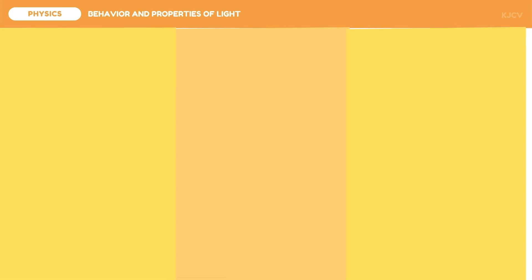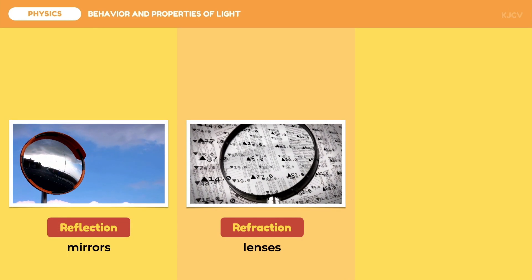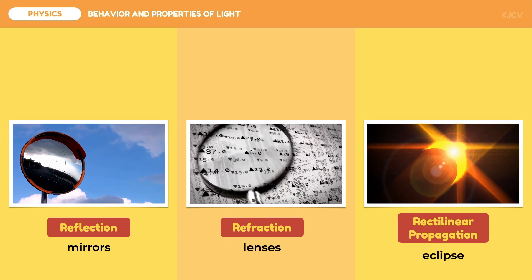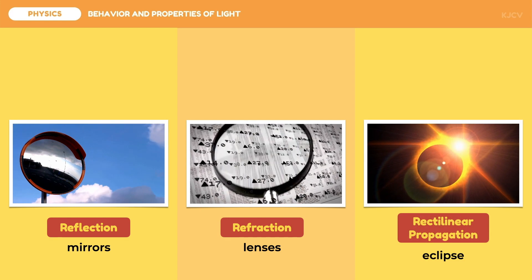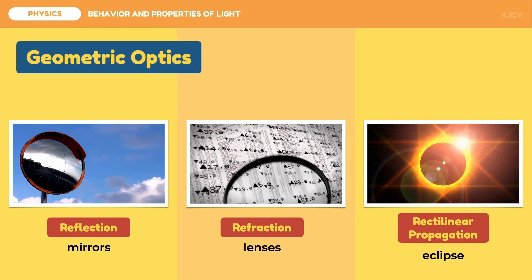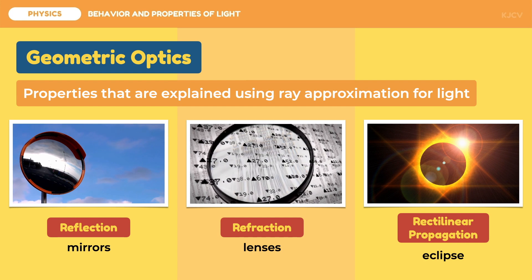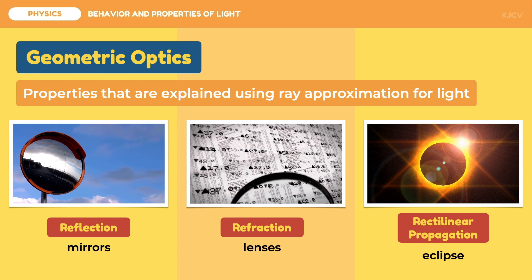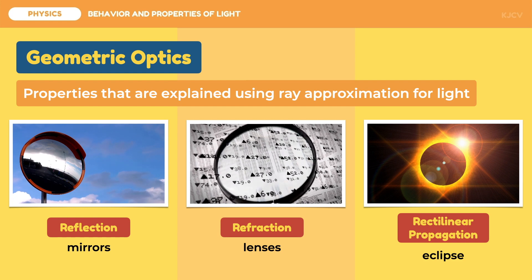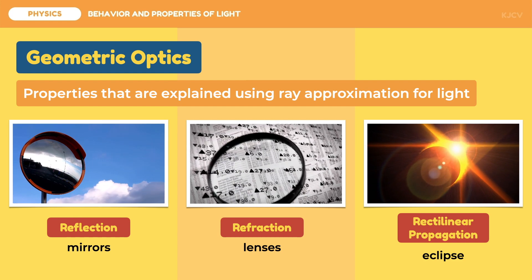These three properties of light—reflection as seen in mirrors, refraction as seen in lenses, and rectilinear propagation as seen in eclipses and shadows—are all explained by the particle theory of light, which are under geometric optics. This includes the properties that are explained using ray approximation for light. From the word itself, geometric rays are used to diagram the behavior of light as particles. However, some properties cannot be discussed with the particle nature of light.